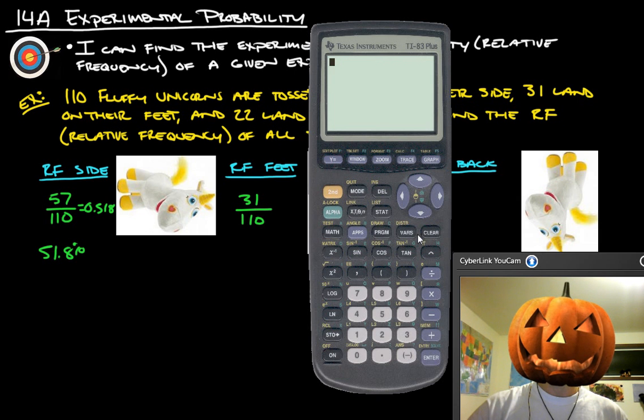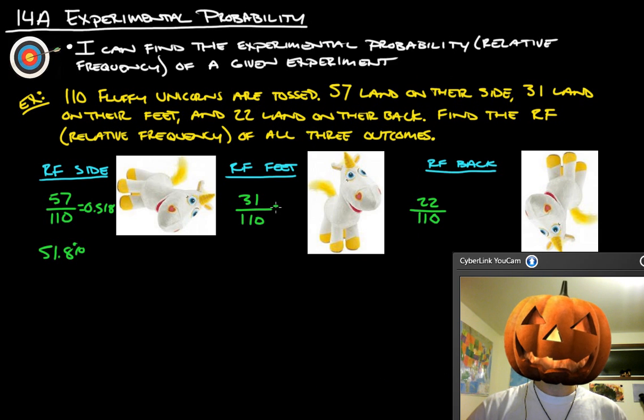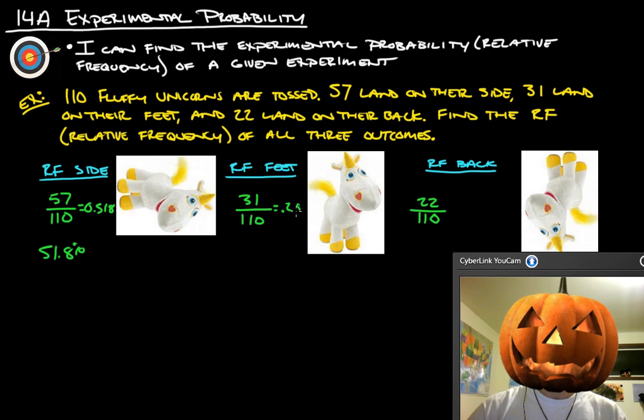Let's do the same thing with this one here. We'll do 31 divided by 110, and we get 28.2%. If we're being official here, .282, so that's 28.2%.